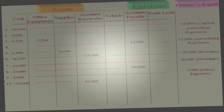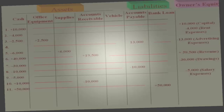Transaction 11: this is a loan. Cash goes up $50,000, and you have a bank loan liability. Liability goes up $50,000. Cash up $50,000, liability increases $50,000.